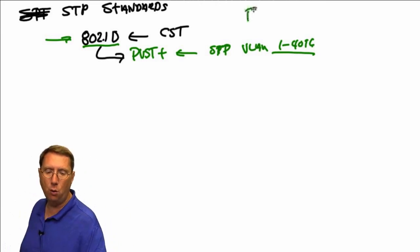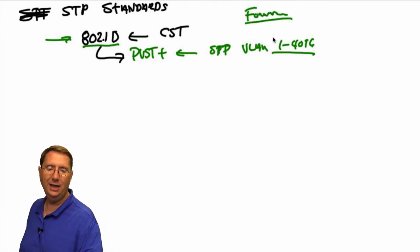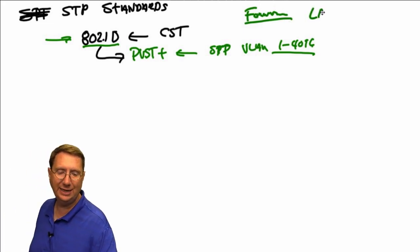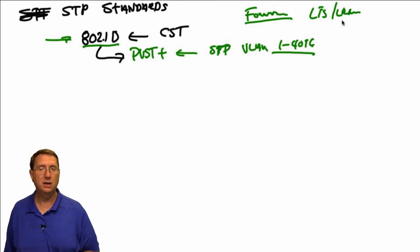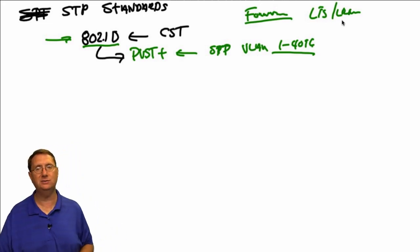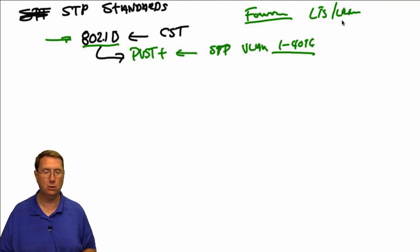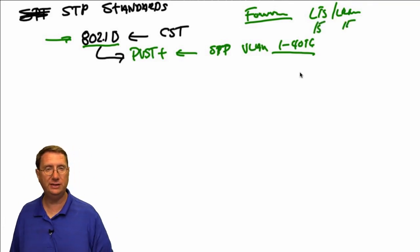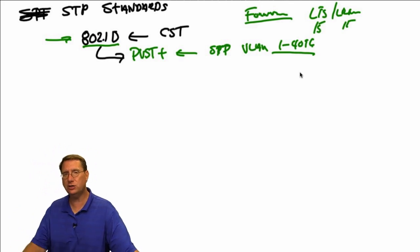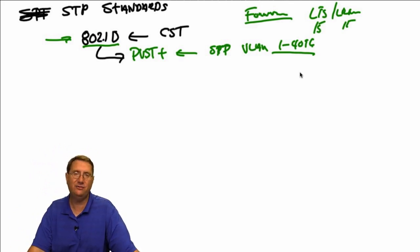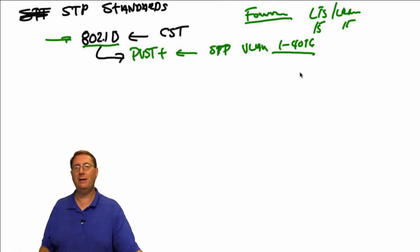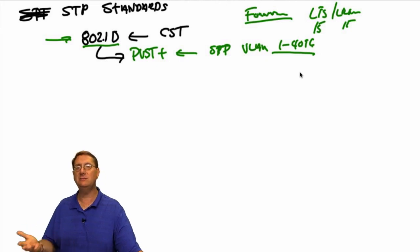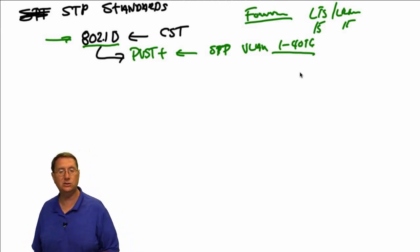For instance, we have something called a forwarding delay. The forwarding delay determines how long I'm going to be listening and learning before I actually forward traffic — this is part of my control plane convergence mechanisms. This is going to be 15 seconds by default for each phase. So 30 seconds could pass in a fully functional environment before I can send information on a link, and it takes some computers less than half that amount of time to actually boot up — causing authentication failures.